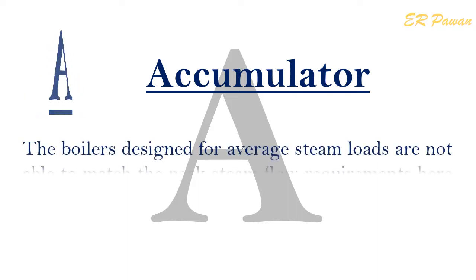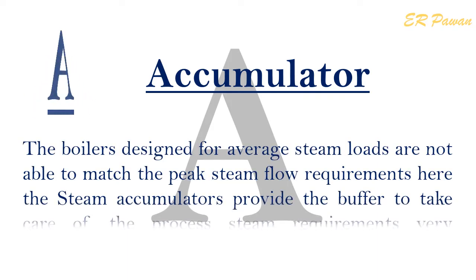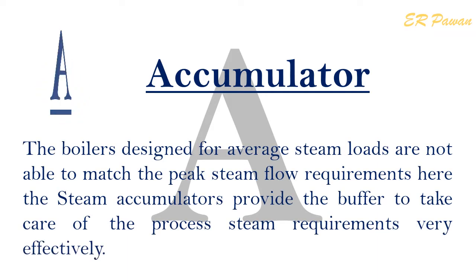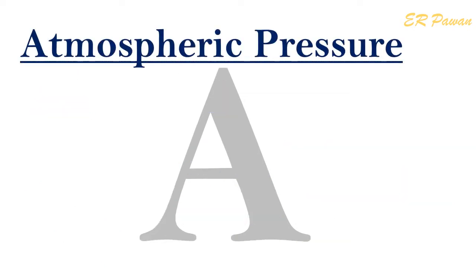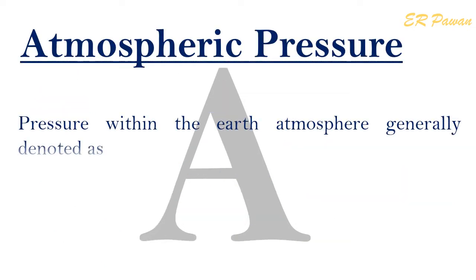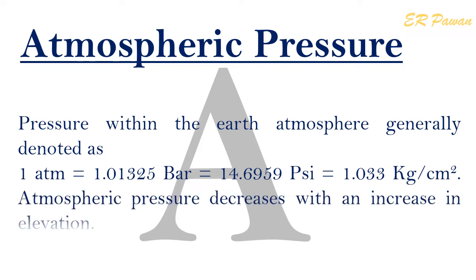A — Accumulator: Boilers designed for average steam loads are not able to match the peak steam flow requirements. Here, the steam accumulators provide the buffer to take care of the process steam requirements very effectively. Atmospheric Pressure: Pressure within the earth's atmosphere, generally denoted as one atmosphere equals 1.01325 bar, equals 14.6959 psi, equals 1.033 kilograms per square centimeter. Atmospheric pressure decreases with an increase in elevation.